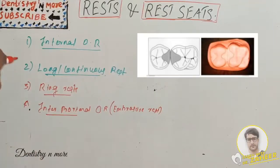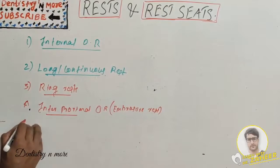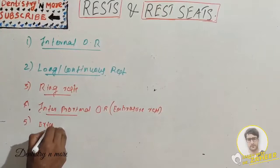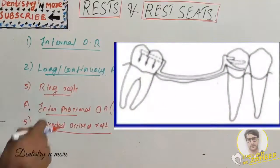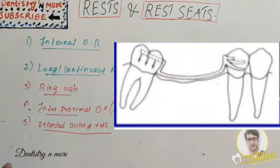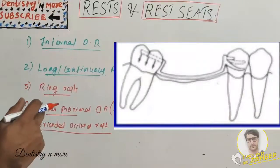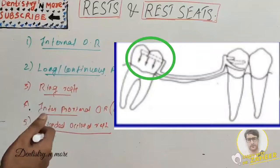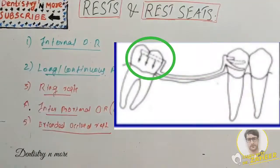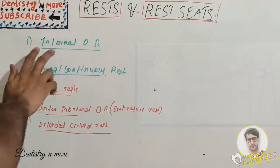Care must be taken to avoid eliminating the contact point of abutment teeth. Sufficient tooth structure must be removed to allow adequate bulk of the components so that occlusion will not be altered. The fifth type is the extended occlusal rest, indicated in Kennedy Class II modification 1 and Class III situations when the most posterior abutment is a mesially tipped molar. This rest should extend more than one-half of the mesiodistal width and approximately one-third of the buccolingual width, with a minimum of 1 mm thickness of metal, rounded with no undercuts or sharp angles.